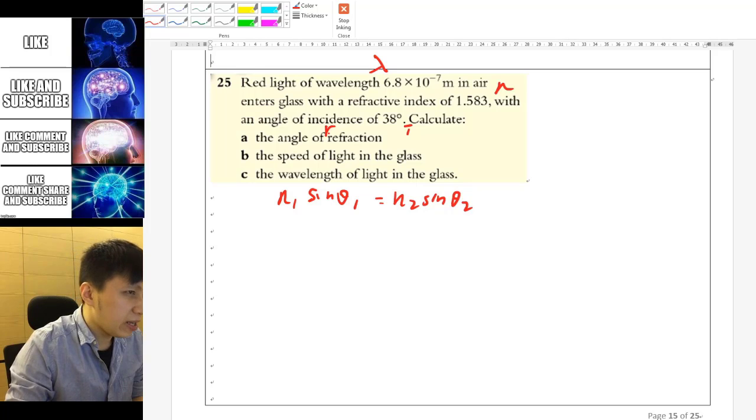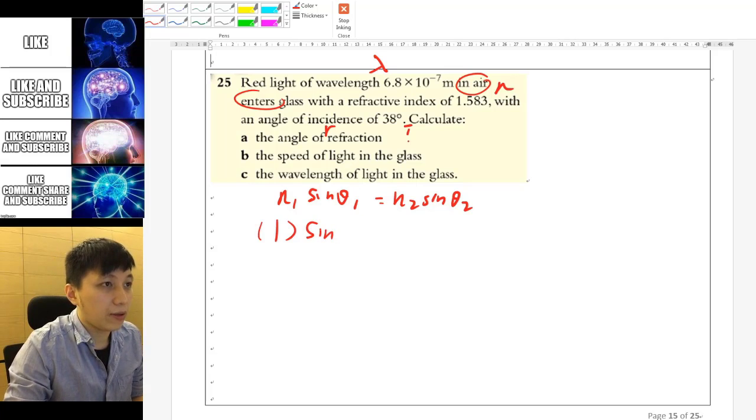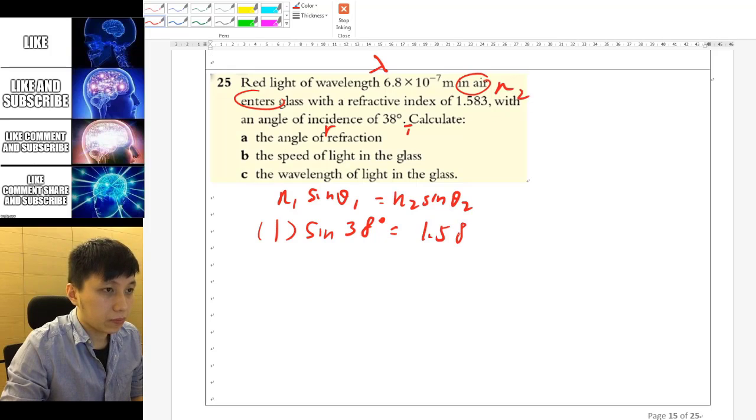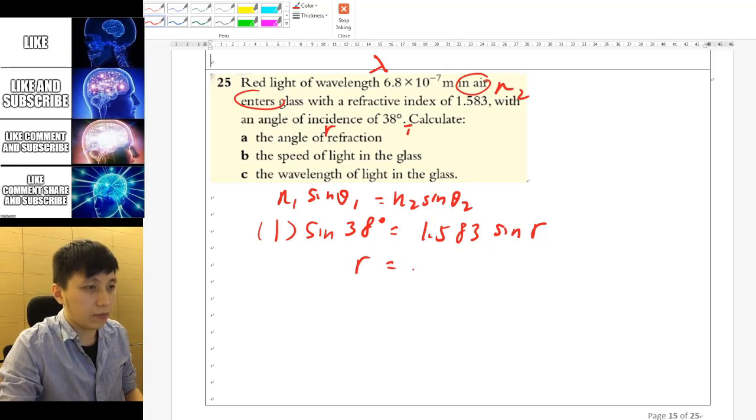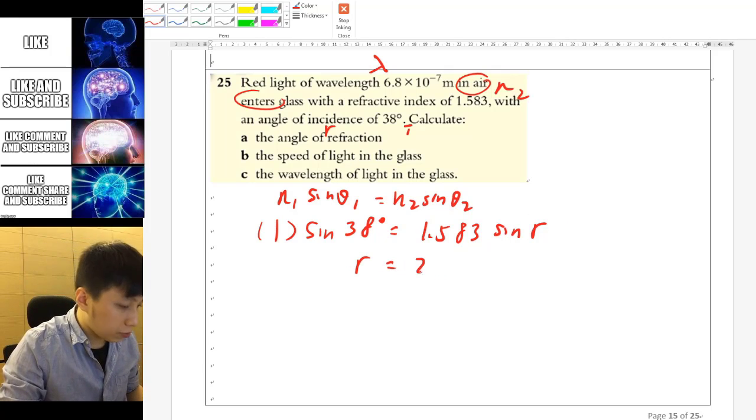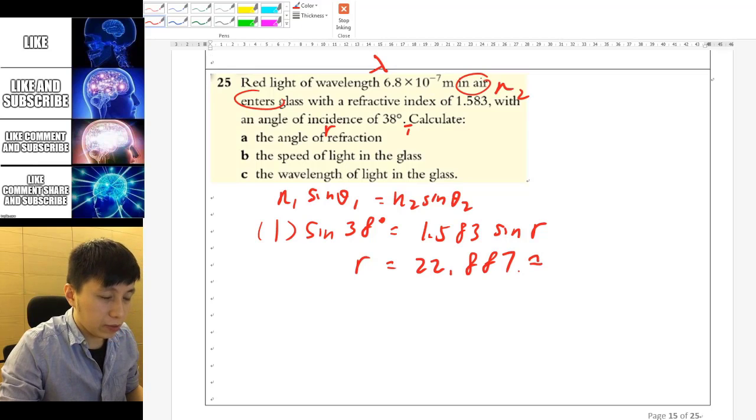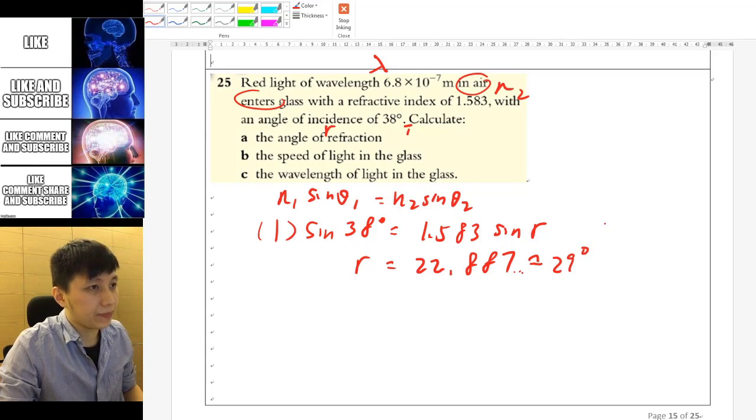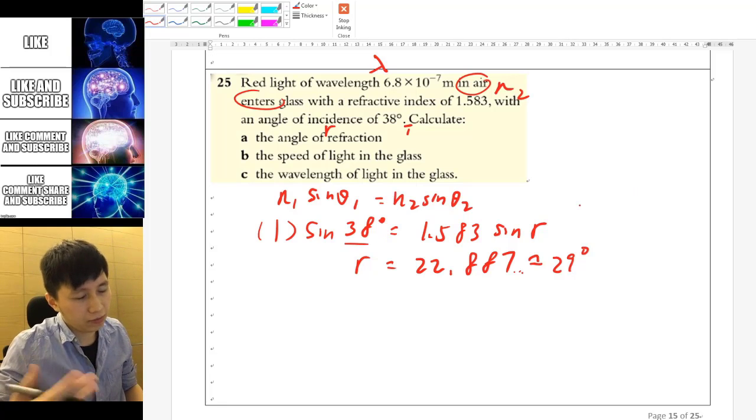Just substitute all the things in. And I believe it's entering from air, yes. So n1 could simply be 1, and then sin theta 1 would be the incident 38 degrees. N2 will be the one that you guessed, so this is n2. And then substitute the R in, and you want to find r. Now, the answer is 22.887, so we will round it to 2 sig figs, so 23 degrees.